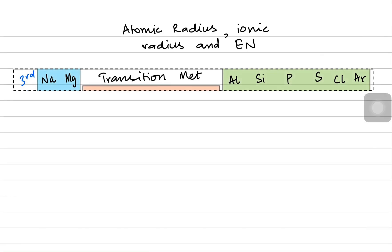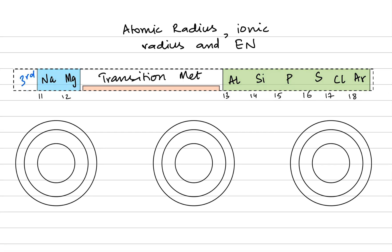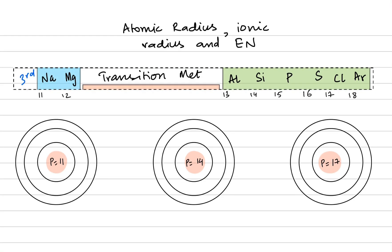When we look at the period three elements, we know their atomic numbers increase across the period, starting from sodium with 11 protons and argon with 18 protons. Let's imagine three of these atoms — they all have three electron shells. We have sodium with atomic number 11, silicon with atomic number 14, and chlorine with atomic number 17.